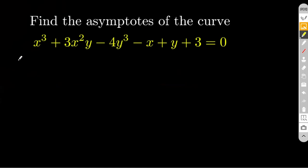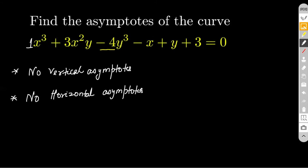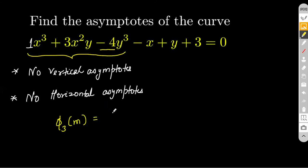Alright, let's look into this new question. Let's start with our analysis of vertical and horizontal asymptotes. For the vertical asymptote, we check the coefficient of y³, which comes out to be −4 — a constant — meaning no vertical asymptotes. For the horizontal asymptote, the coefficient of x³ is also a constant, which is 1, meaning there is no horizontal asymptote. Now let us figure out whether it has an inclined asymptote, following the same mechanism. The highest degree terms are x³ − 3x²y − 4y³, and in that we put y as m and x as 1.